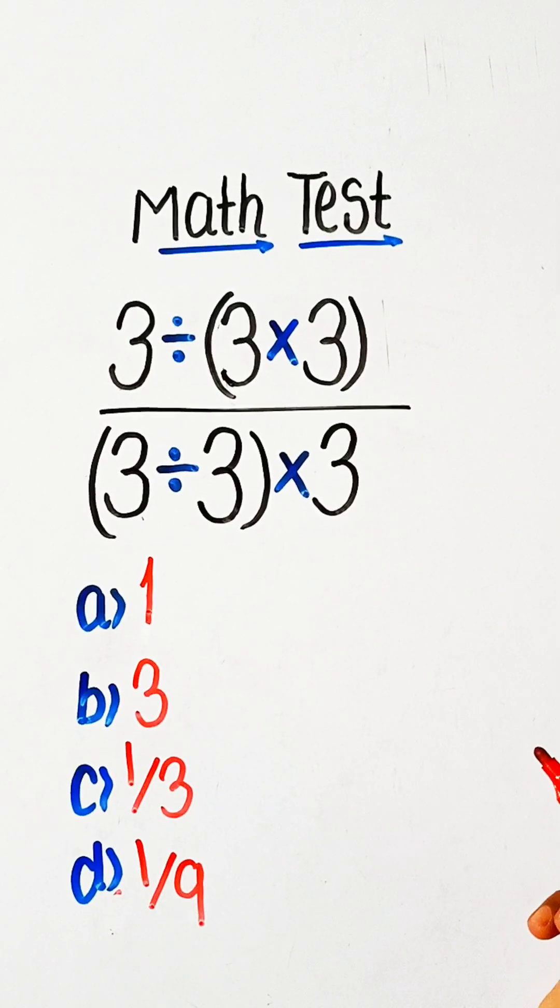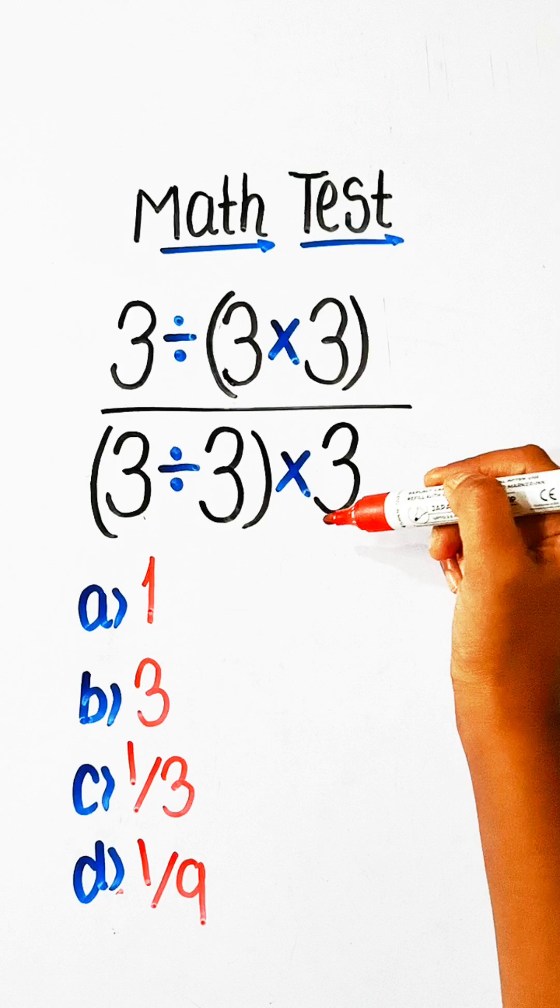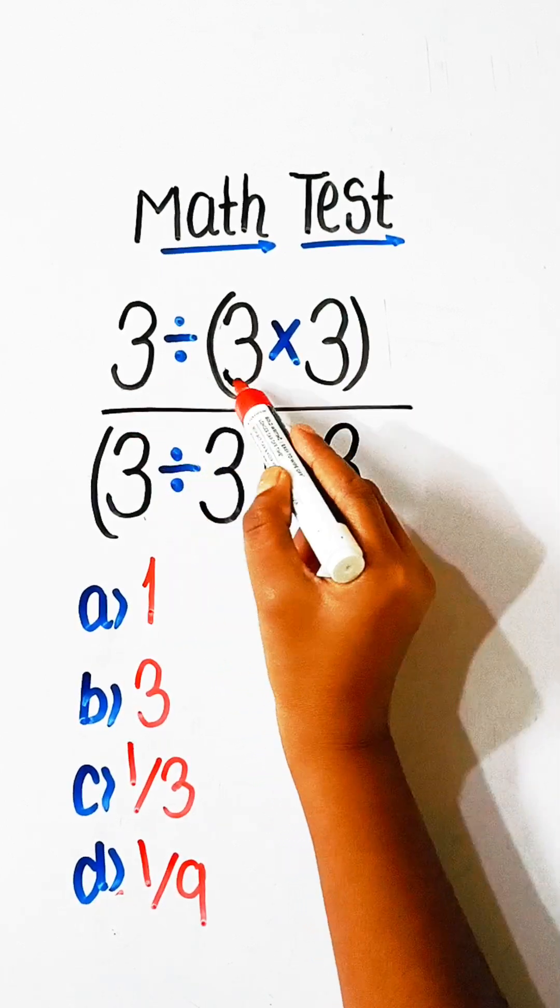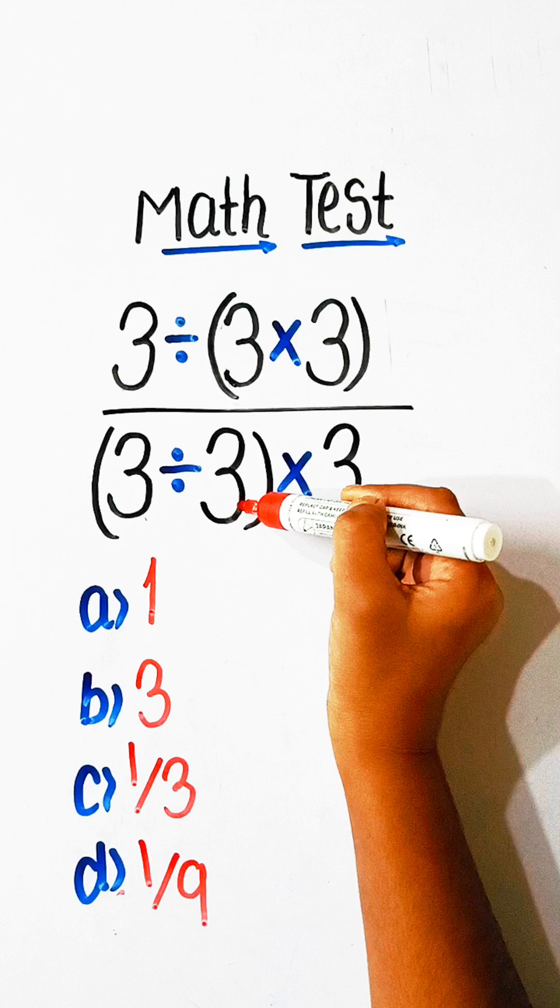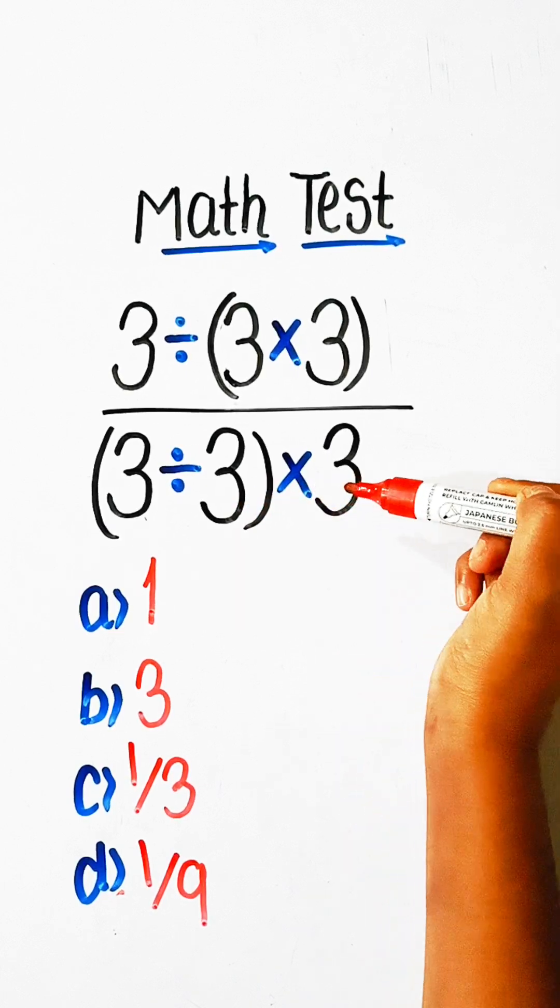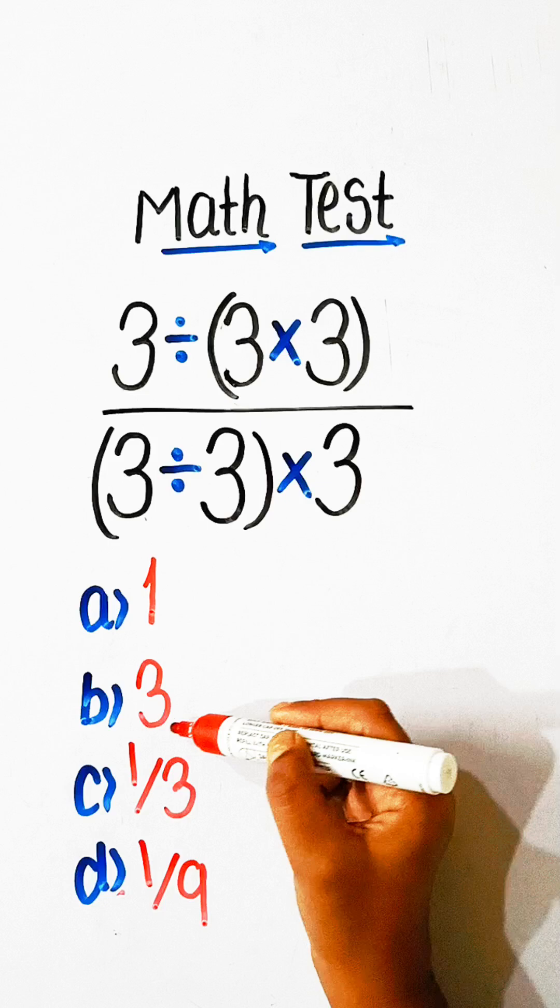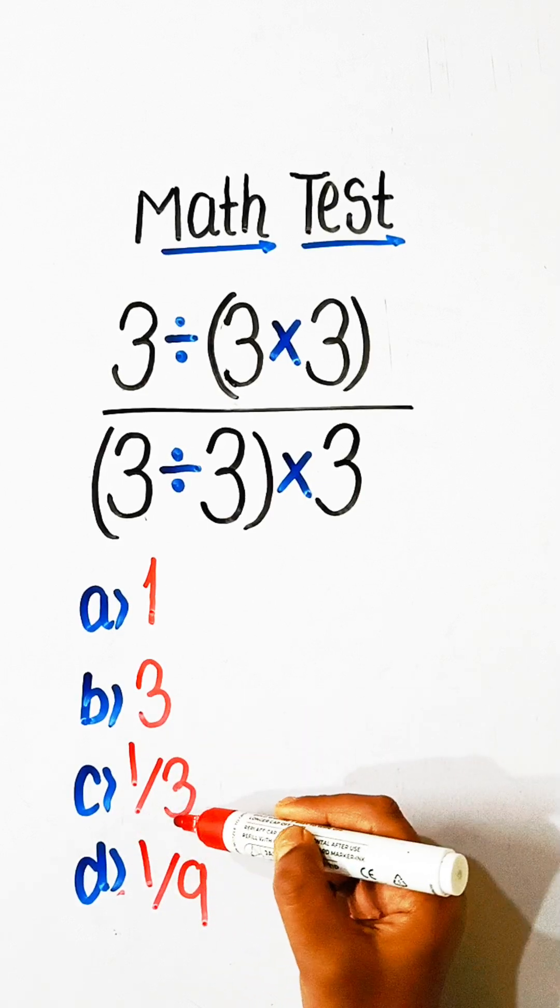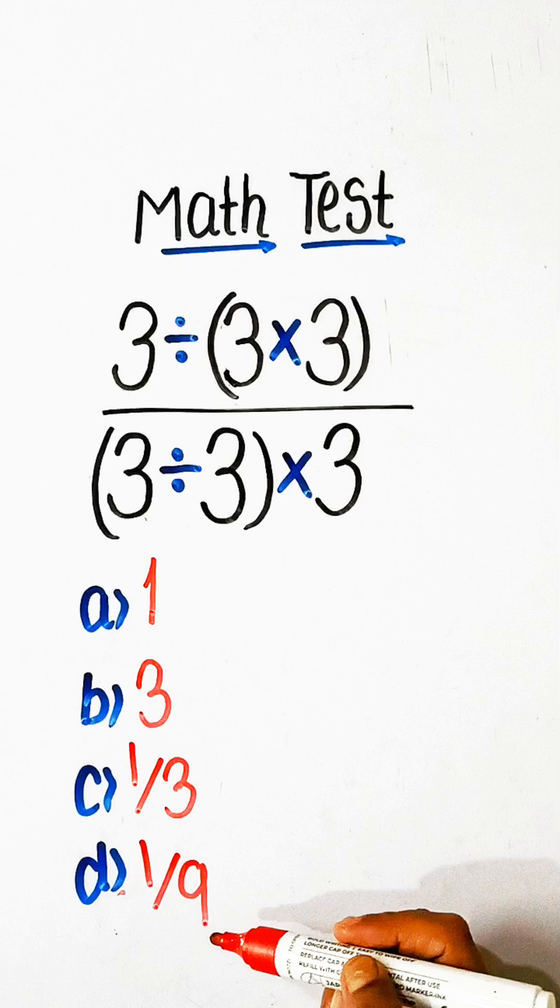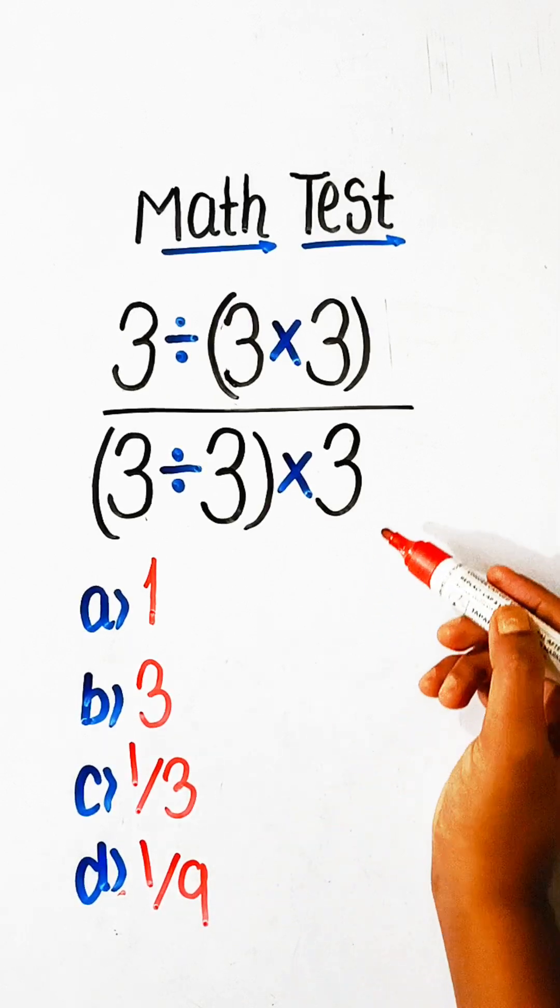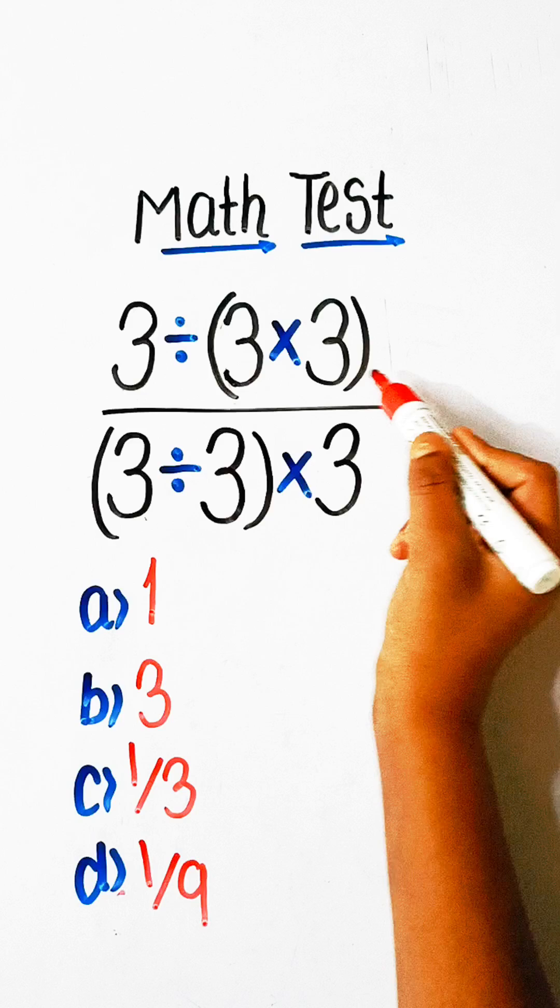Hello friends, in this video we will try to solve this math expression: 3 divided by 3 multiplied by 3, upon 3 divided by 3 multiplied by 3, equals to what? Option A: 1, Option B: 3, Option C: 1 upon 3, or Option D: 1 upon 9. So we will try to solve this expression.